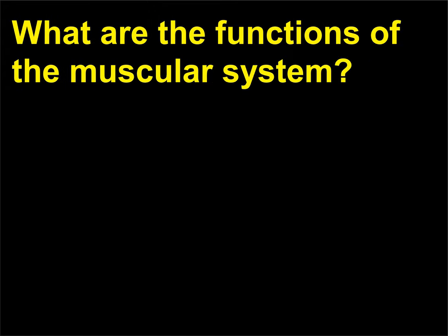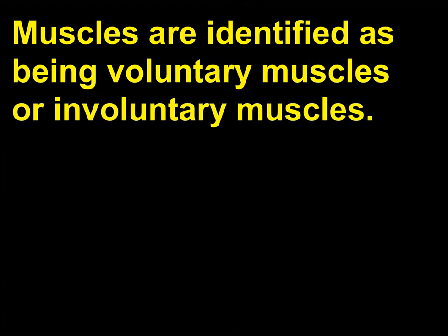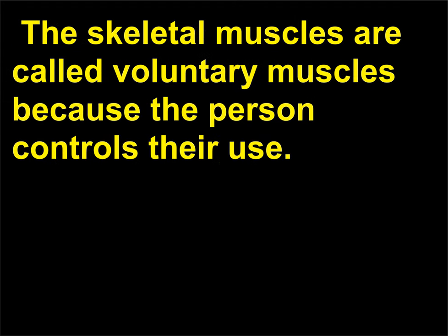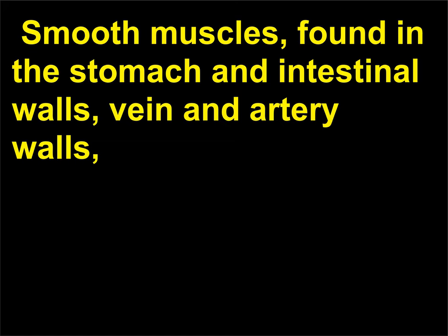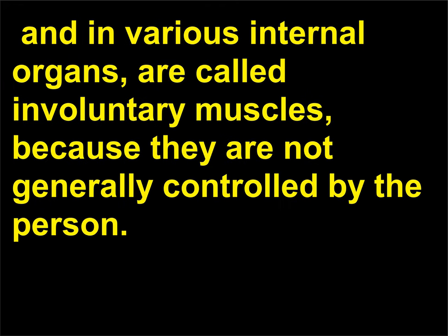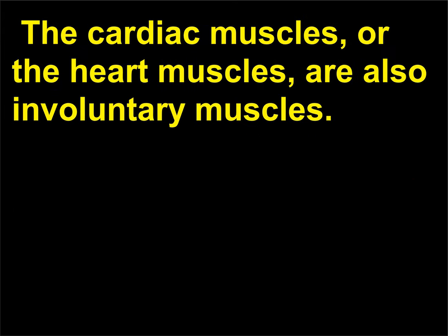What are the functions of the muscular system? Muscles are identified as being voluntary or involuntary muscles. The skeletal muscles are called voluntary muscles because the person controls their use; they are used to move the various parts of the body. Smooth muscles, found in the stomach and intestinal walls, vein and artery walls, and in various internal organs, are called involuntary muscles because they are not generally controlled by the person. The cardiac muscles, or heart muscles, are also involuntary muscles.